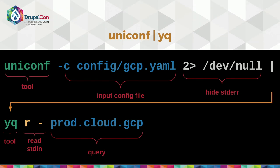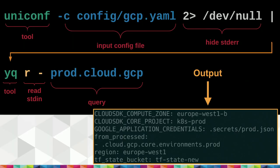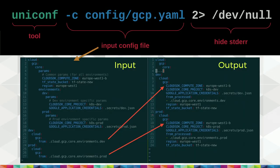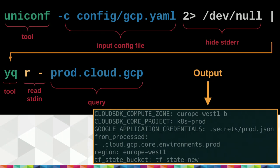Here we can see how we combine these tools to work together. The first tool processes and collects our data, then pipes it — the pipe sign means the output of the first command becomes the input of the second command — and in the second command we extract a part of the YAML file. On the next slide we can see the output: if you remember the configuration from before, here we have the output as plain values.